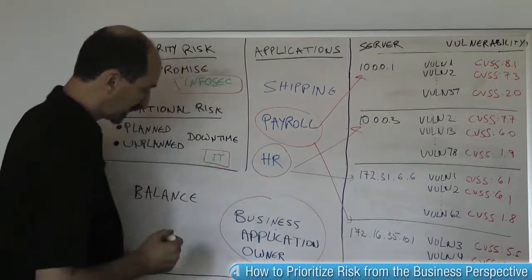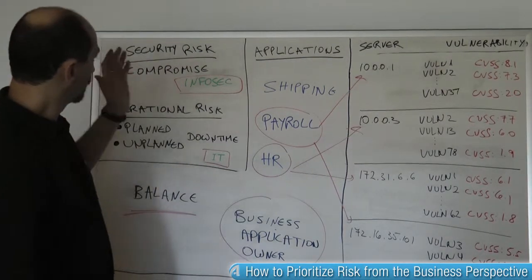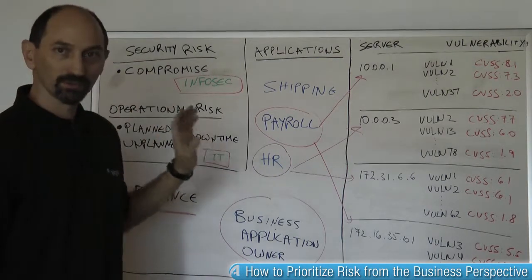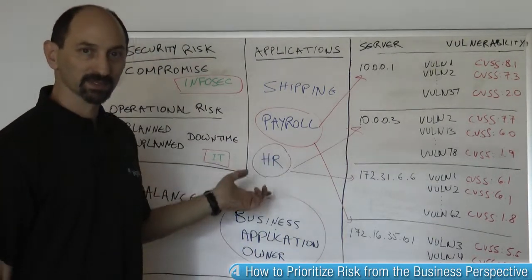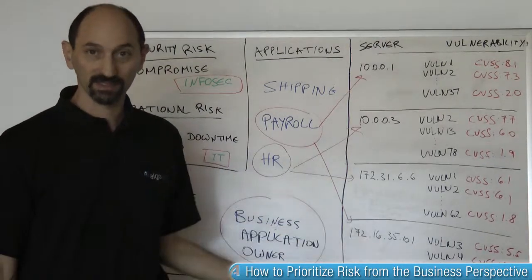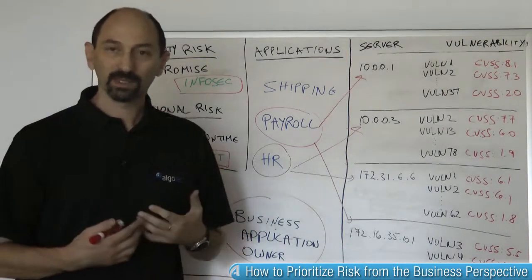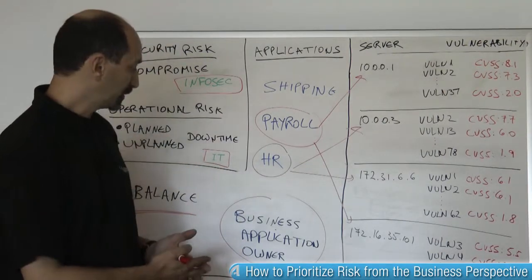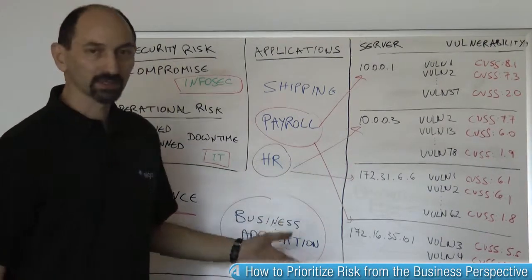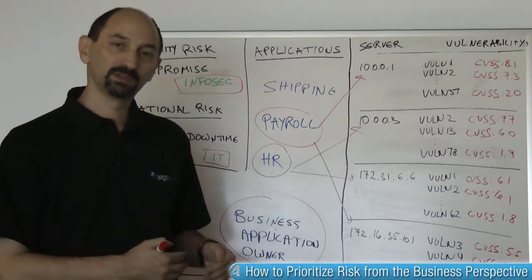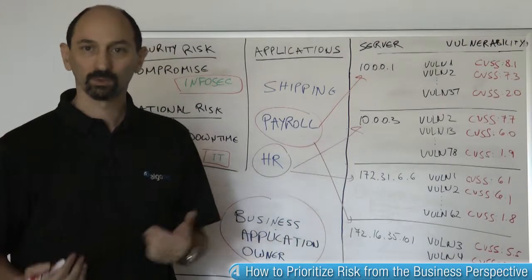And that is the business application owners, who can provide balance between the risk of compromise against the risk of planned and unplanned downtime, and put all of that information in the perspective of the importance and business criticality of the application at risk. Once we get the business application owners into the decision-making process, we can make a much more informed and accurate decision about the true priority of taking remediation actions — which applications we need to deal with more urgently, and which should be delayed because the operational risk is too high and it's not a good time to patch them right now.